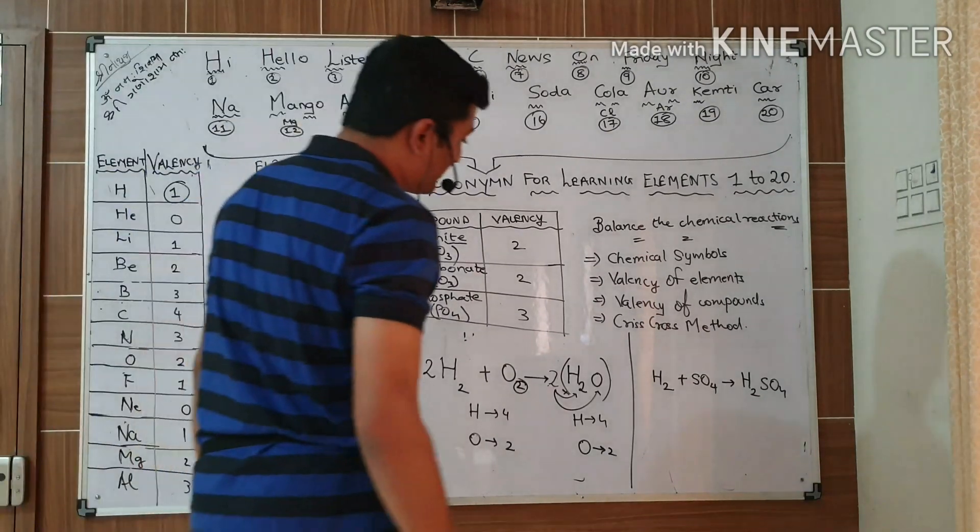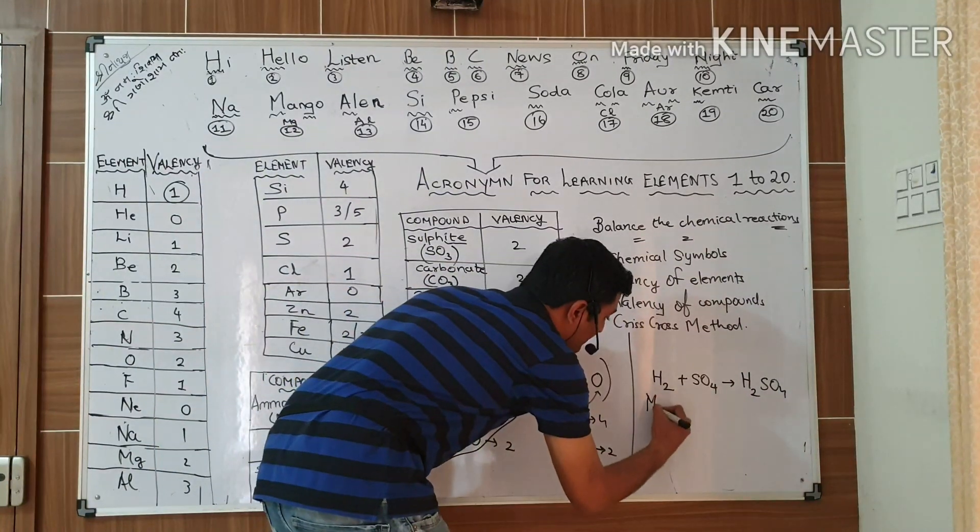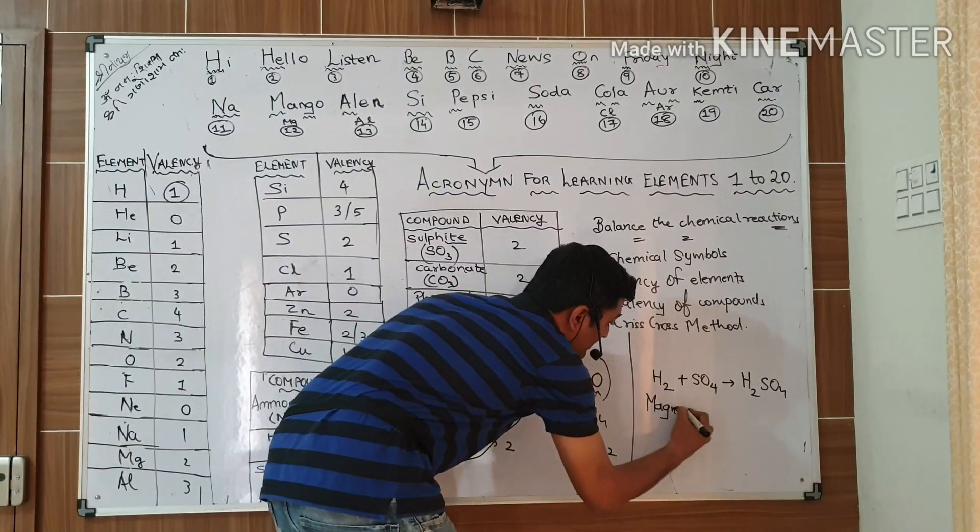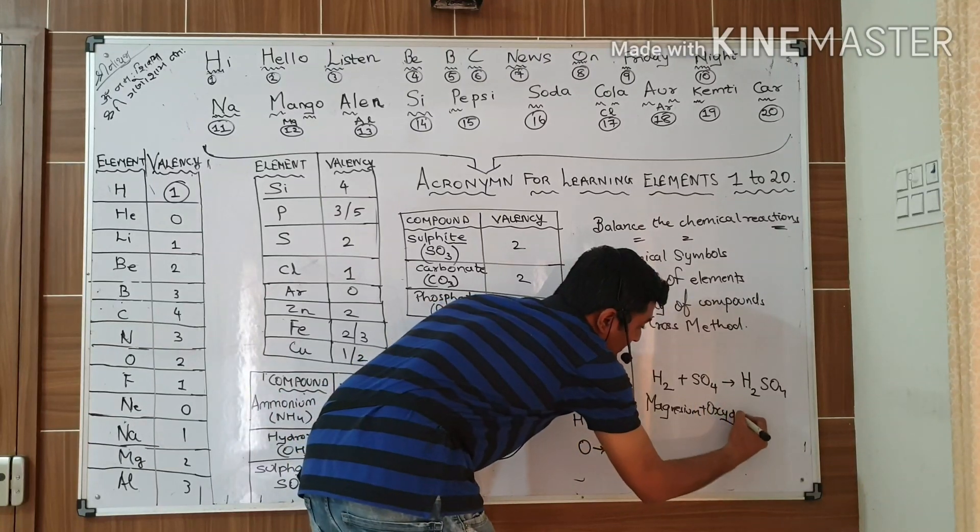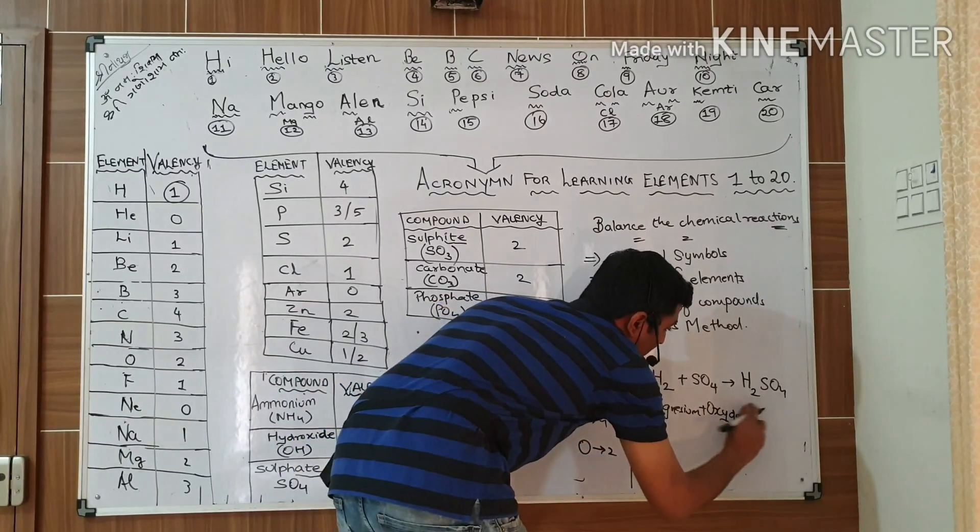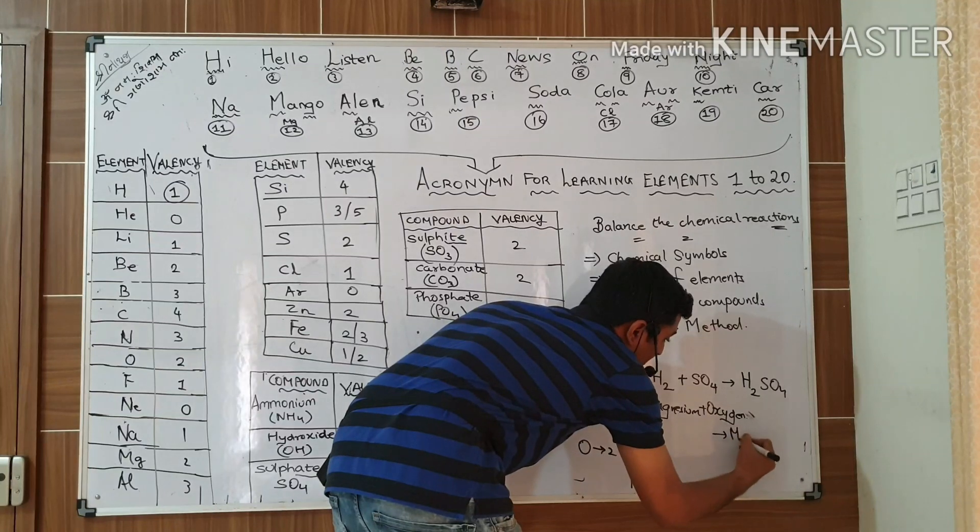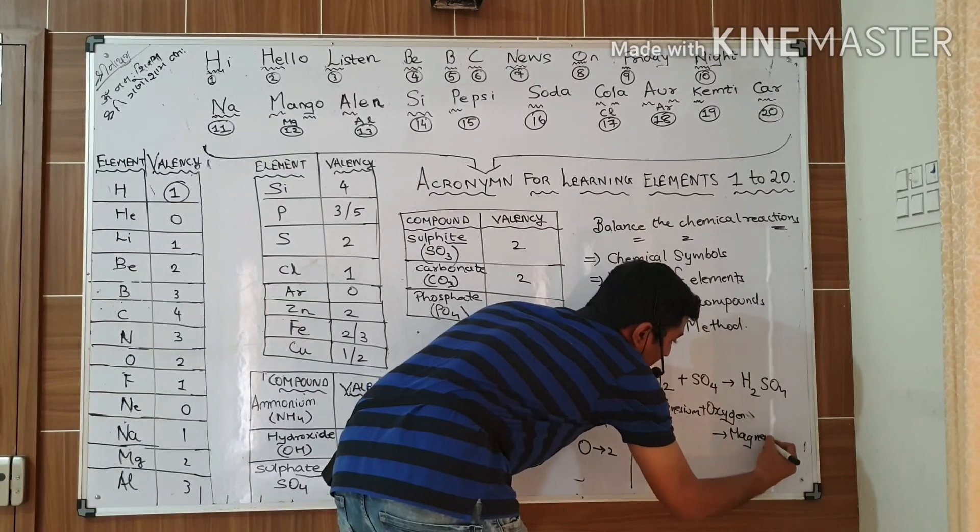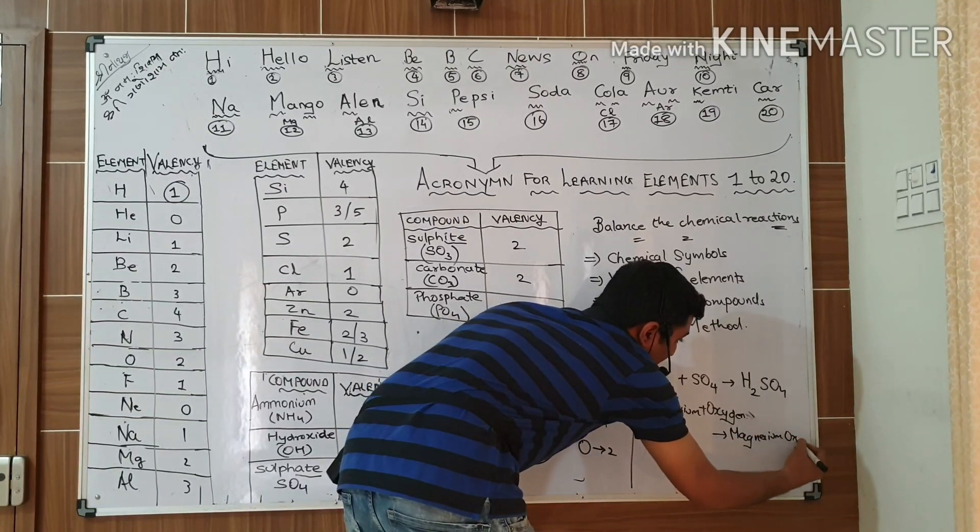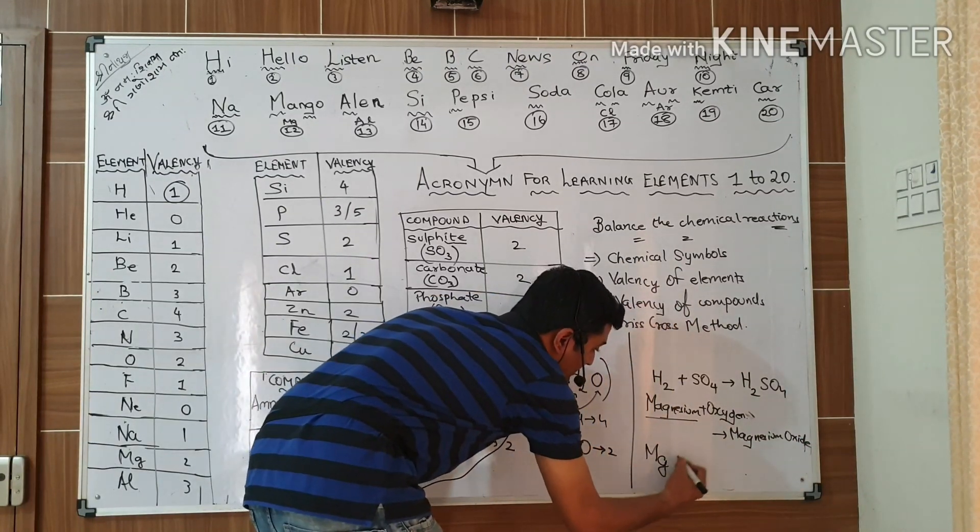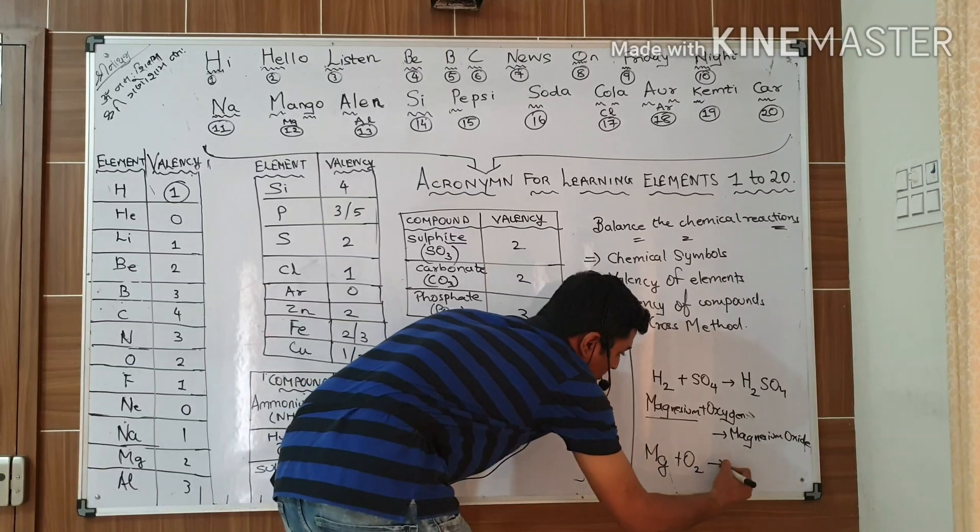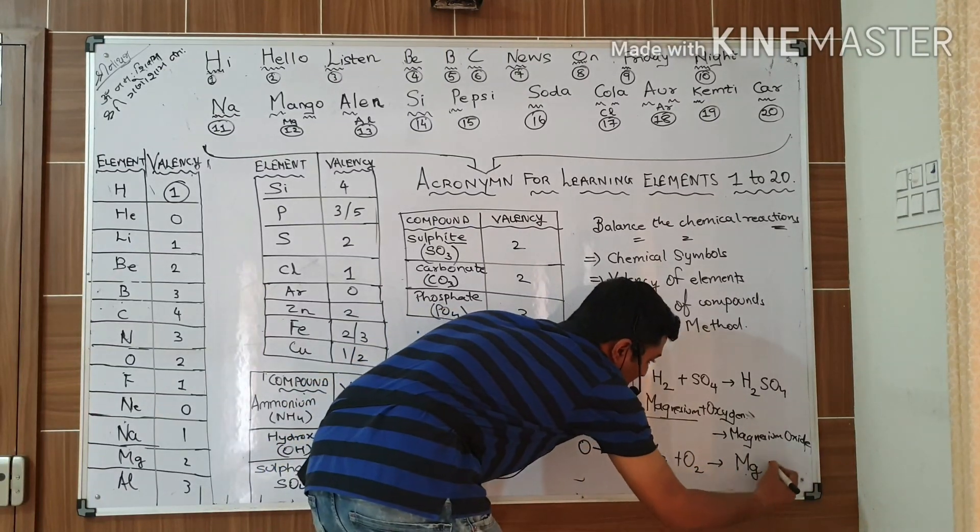Let us form sulfuric acid. How sulphuric acid is formed? When hydrogen reacts with sulfate, it forms sulfuric acid. This equation is already balanced. There is no need to balance this equation. Now I am giving one more example. Let's try with magnesium reacts with oxygen to give magnesium oxide. Mg plus O2 gives you MgO. Why MgO? What is valency of magnesium? 2. Oxygen valency is 2.